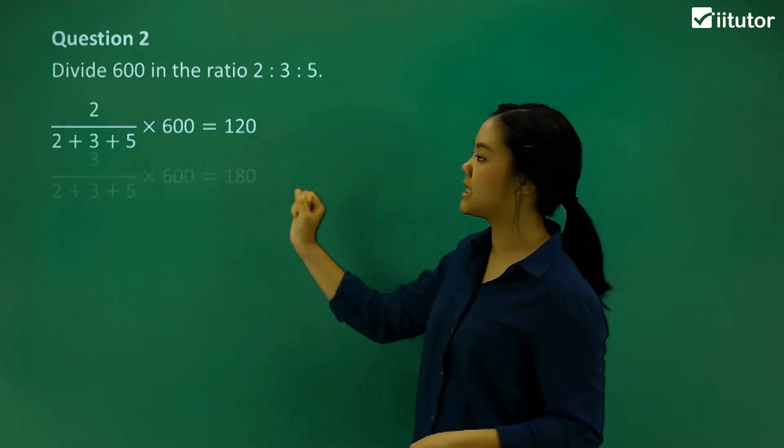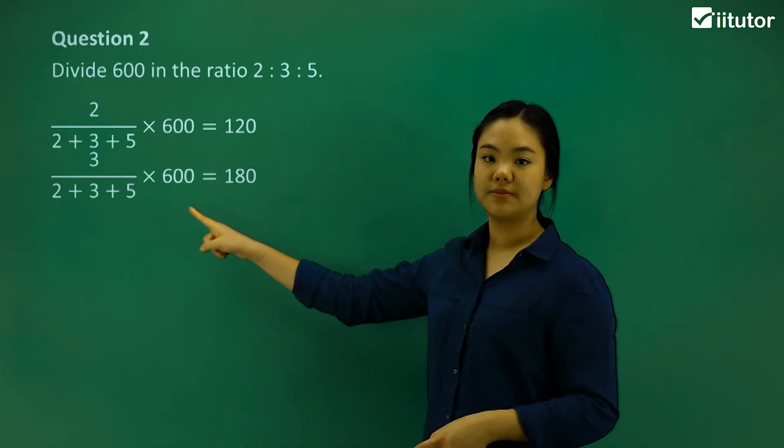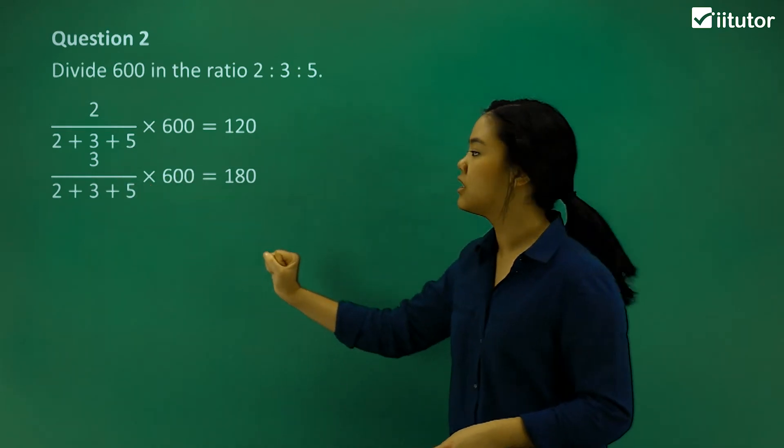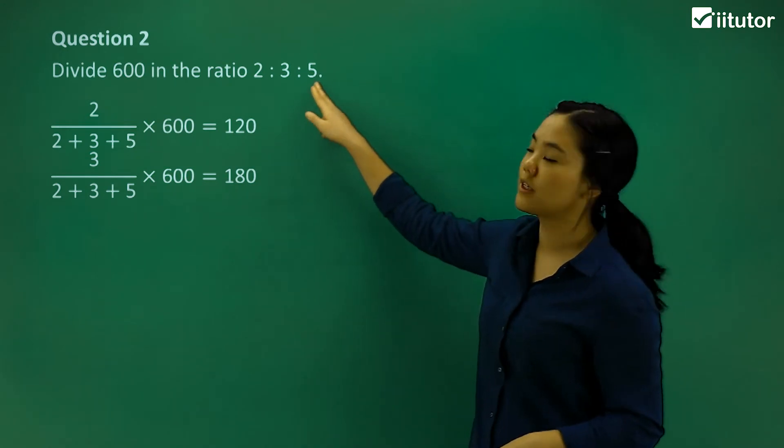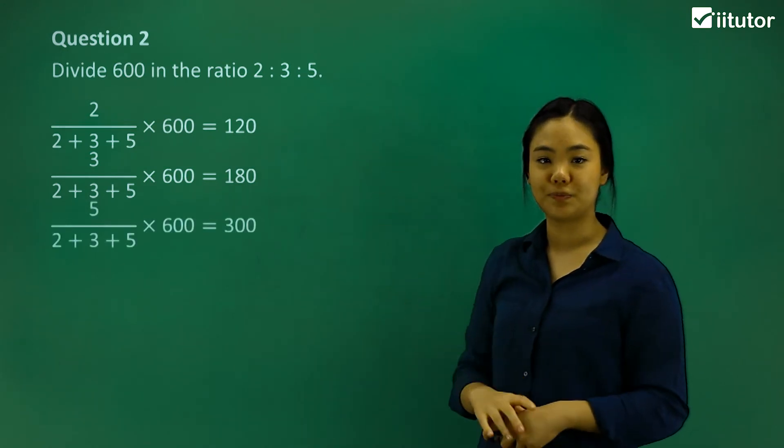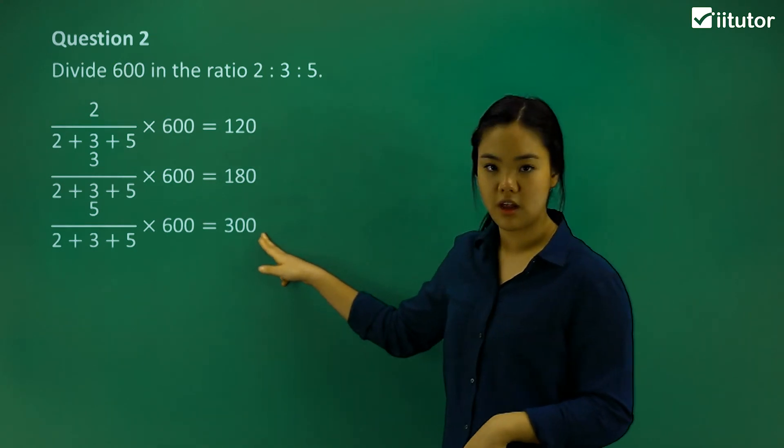So for 3, we do the same like that. 3 over 2 plus 3 plus 5 and you get 180. And the same for that value. So the answer is 300.